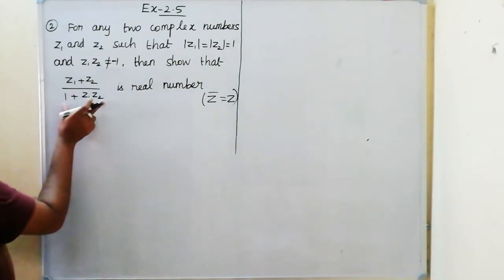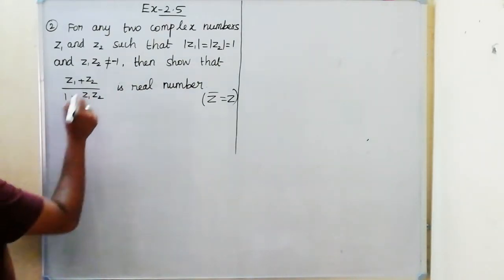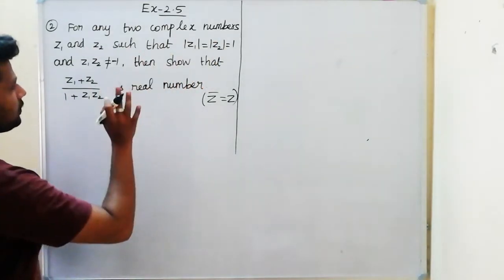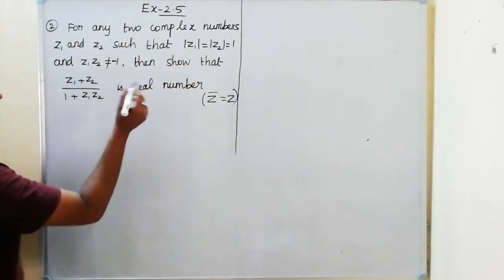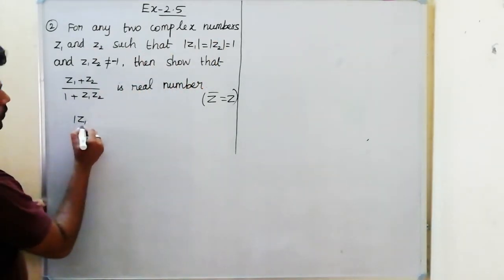First, what we need to do is find z in terms of the given condition. So from the condition, we need to find z1 using the modulus condition.